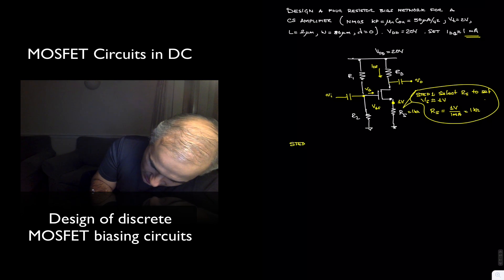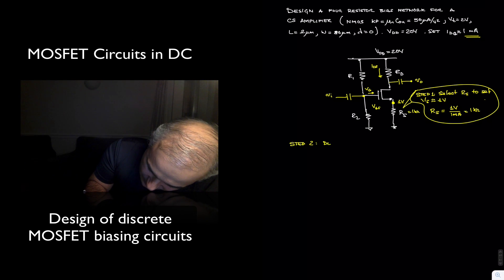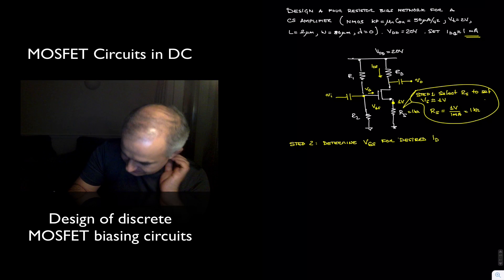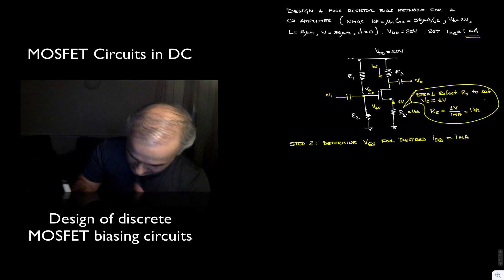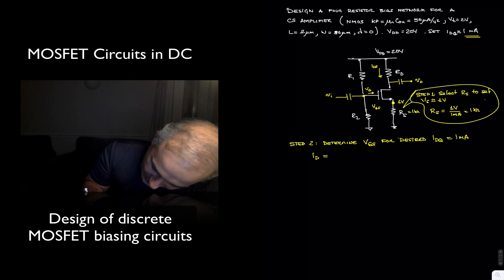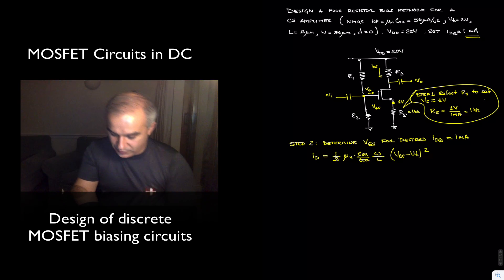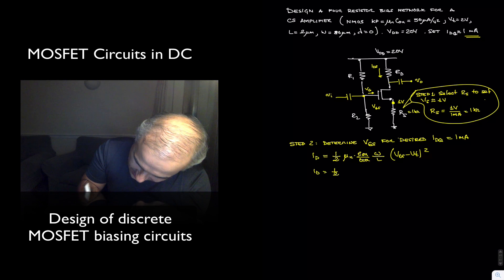So in step two, determine what is the voltage gate to source for the desired drain current, which in this case is 1 mA. So, if you recall, the drain current is one-half mu_N epsilon_OX times T_OX times width over length times V_GS minus V_T squared. It's that quadratic relationship. Or one-half K_P times width over length times V_GS minus V_T square.